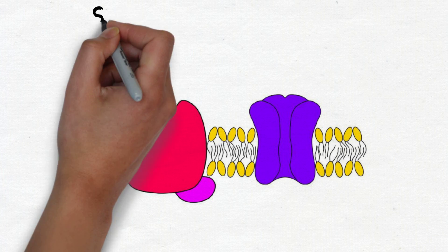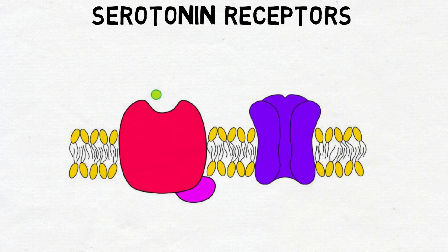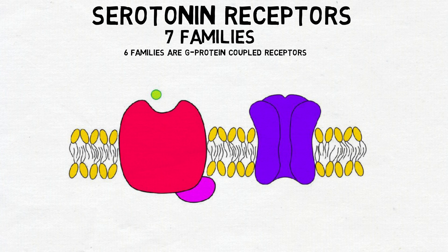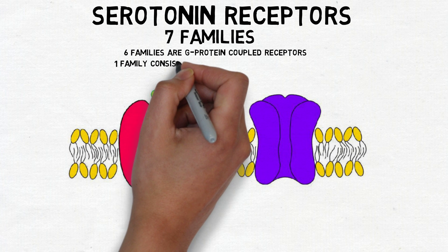Researchers have identified seven different families of serotonin receptors, which differ from one another in distribution, the substances that bind to them, and the effects they mediate. All but one of these families of receptors consists of G-protein-coupled receptors. The other receptor family consists of ligand-gated ion channels.